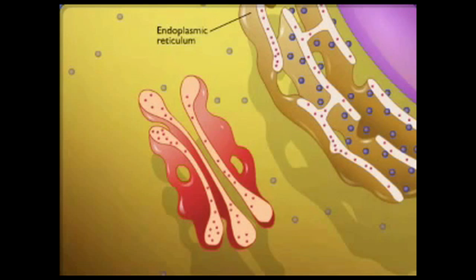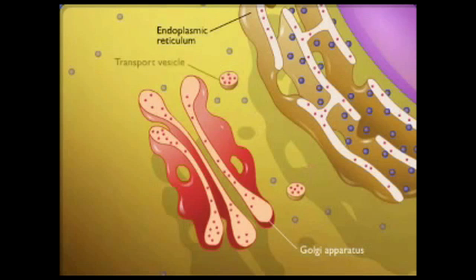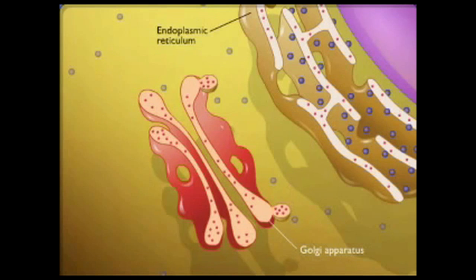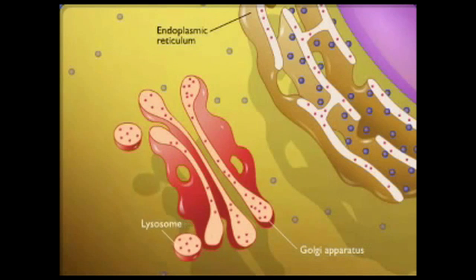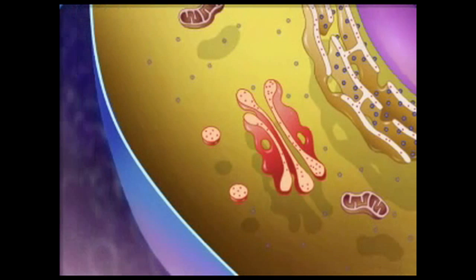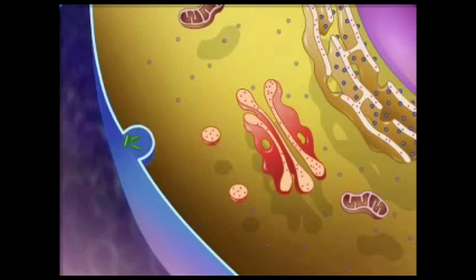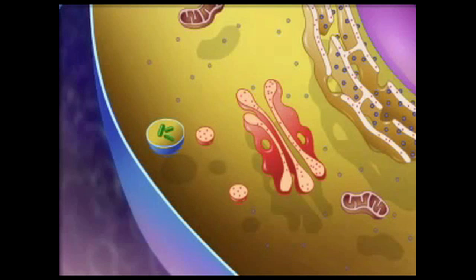These enzymes are then transported to the Golgi apparatus by transport vesicles. The lysosomes arise from the Golgi apparatus. When particles such as viruses or bacteria are ingested by phagocytosis, the lysosome fuses with the particle-containing vesicle called a phagosome and delivers the hydrolytic enzymes.